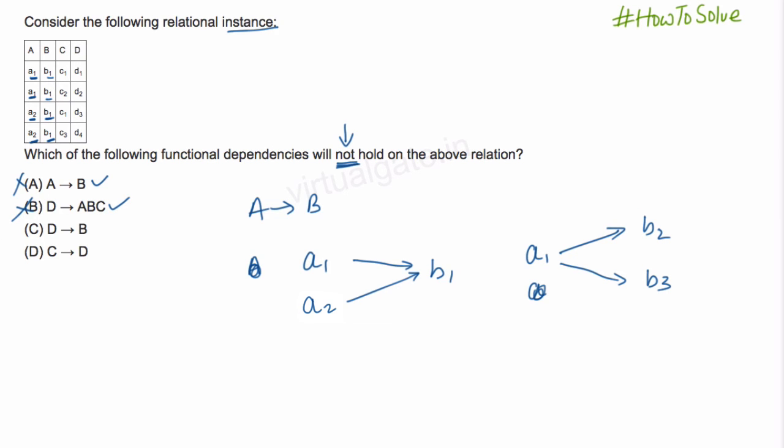Now let us go for D determines B. Here also in this case, D is determining something, and as we already know it is a candidate key. This will hold, right. This is not our answer.